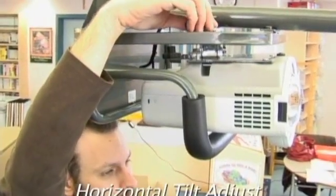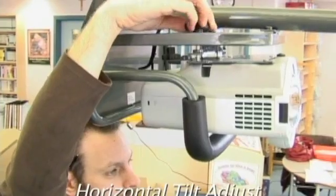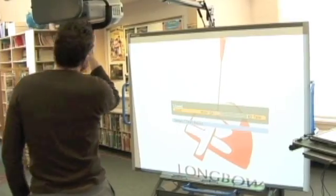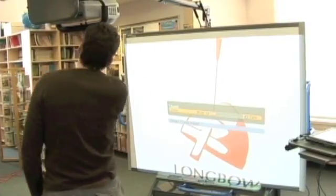Using the knob shown, adjust the projected image so that the top edge of the image is level with the top edge of the screen area on the board. Adjust the zoom and keystone if necessary to maintain a square image.